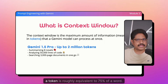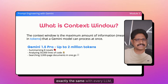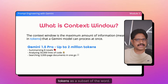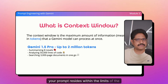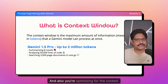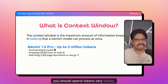A token is roughly equivalent to 75% of a word. This is not exactly the same with every LLM, but you can roughly measure tokens as a subset of a word. You have to make sure that your prompt resides within the limits of the context window size and that you are optimizing for context, because ultimately tokens are the new currency and you should spend them very wisely.